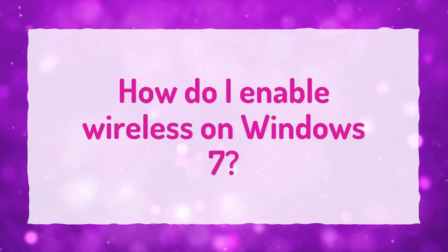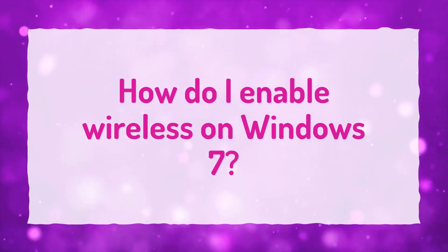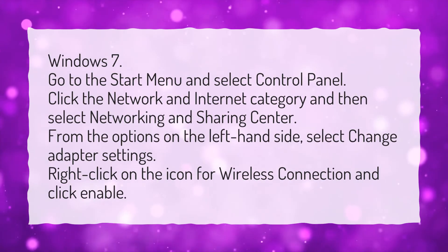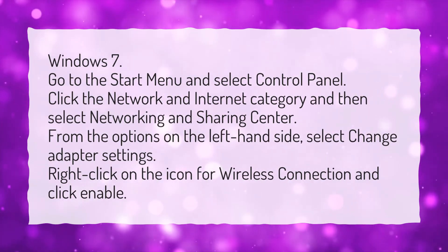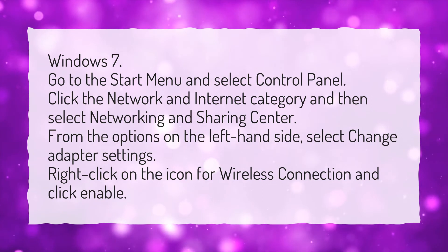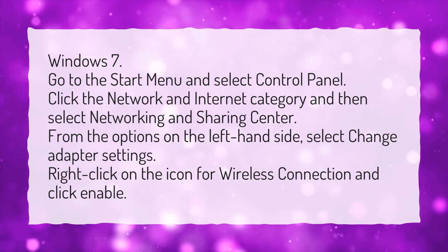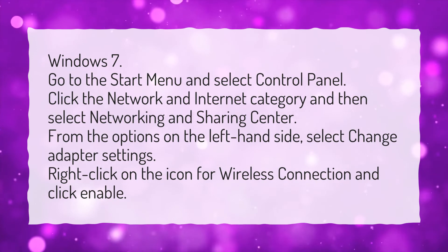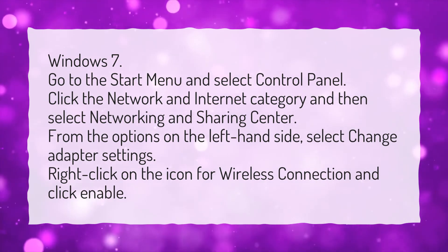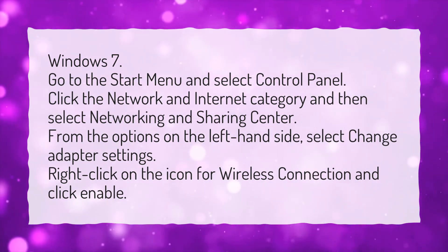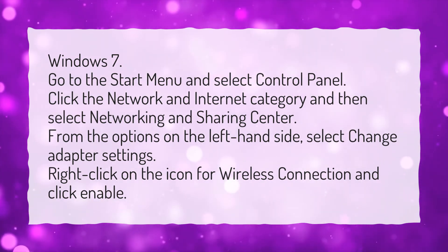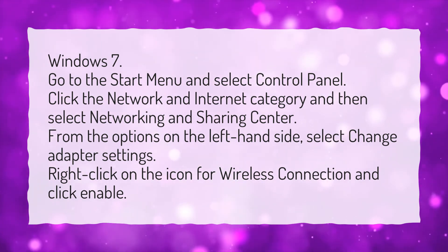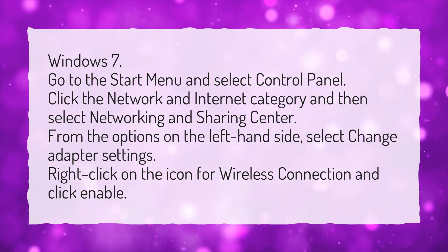How do I enable wireless on Windows 7? Go to the Start menu and select Control Panel. Click the Network and Internet category and then select Networking and Sharing Center. From the options on the left-hand side, select Change Adapter Settings. Right-click on the icon for wireless connection and click Enable.